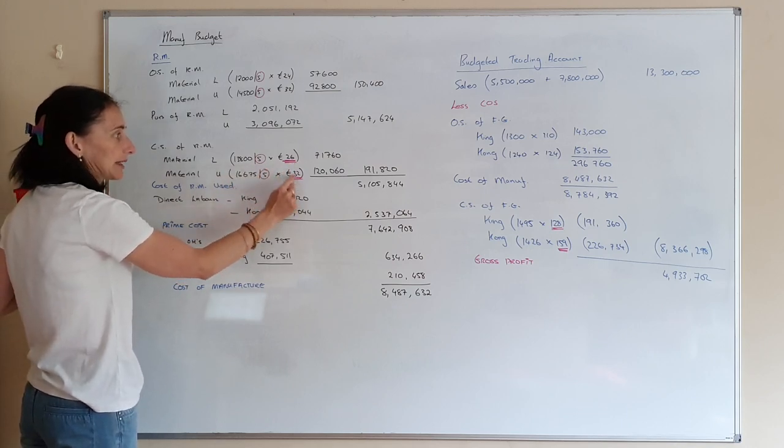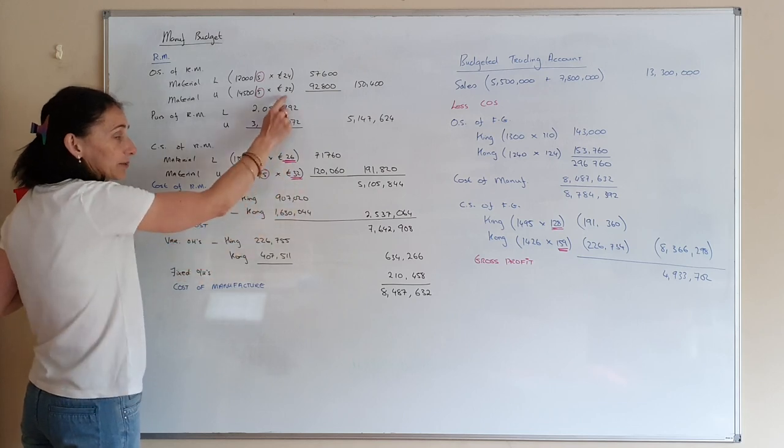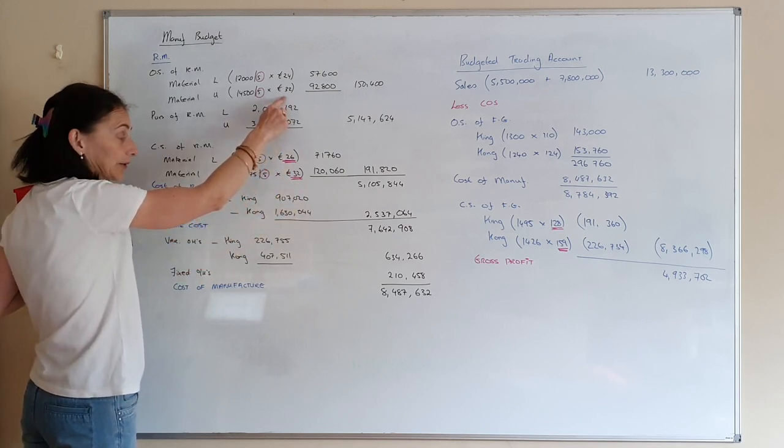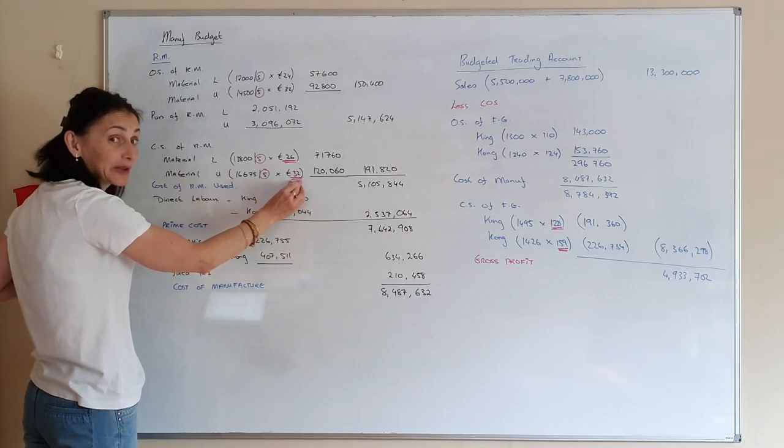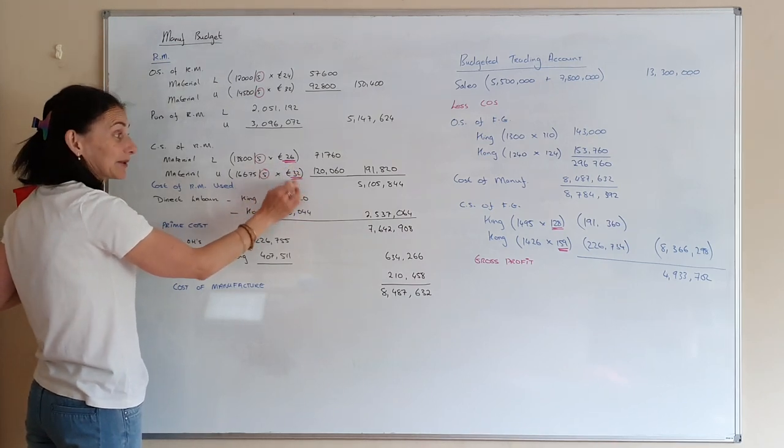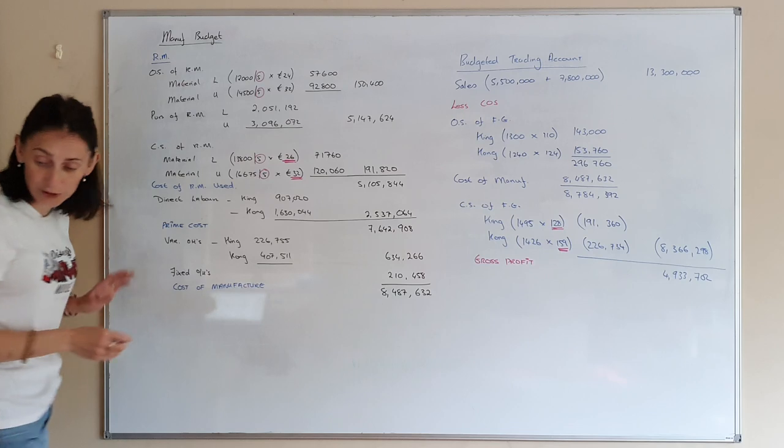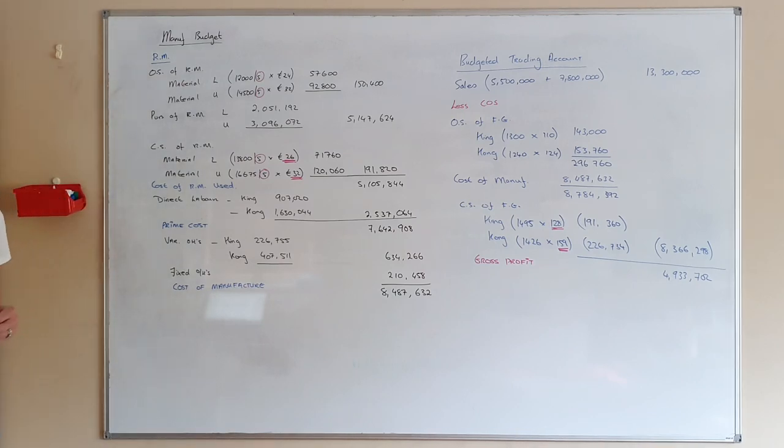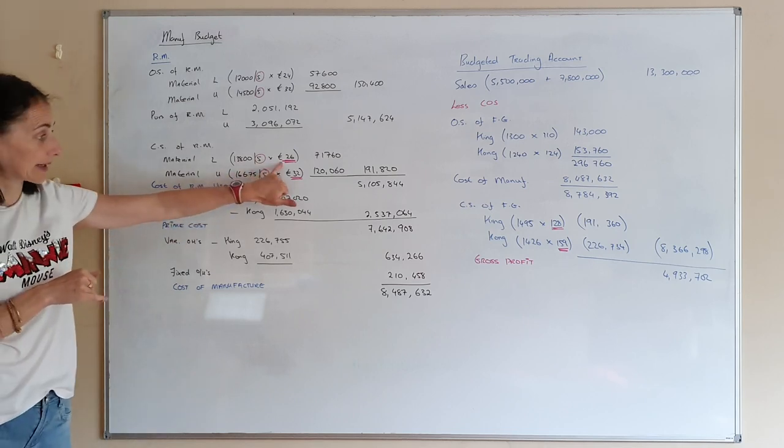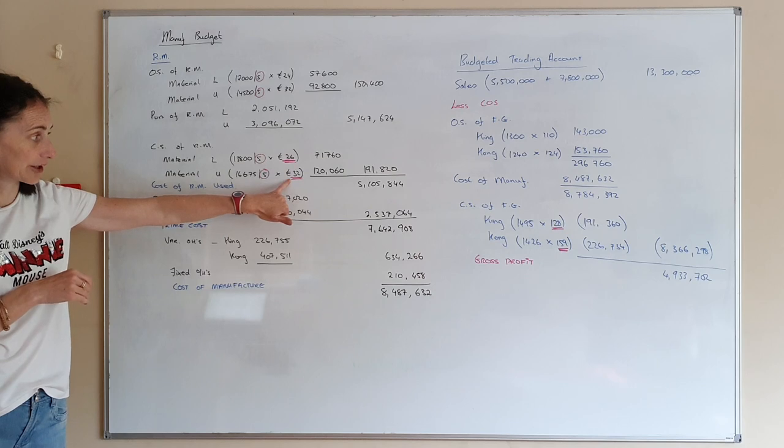Now, I've highlighted these figures here. This is what your opening stock costs you. This is what they expect the stock during the year to cost. So these prices will have changed. And if you look at your question, it's about four lines up from the bottom. The current price of five grams of material L is 26, and the current price of material U is 32.